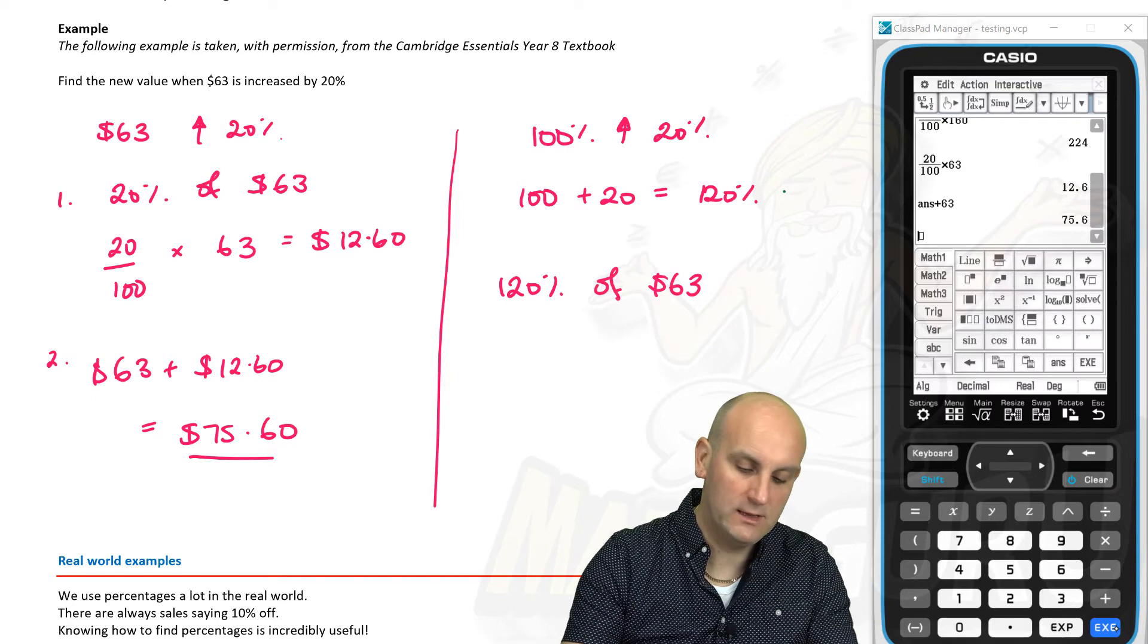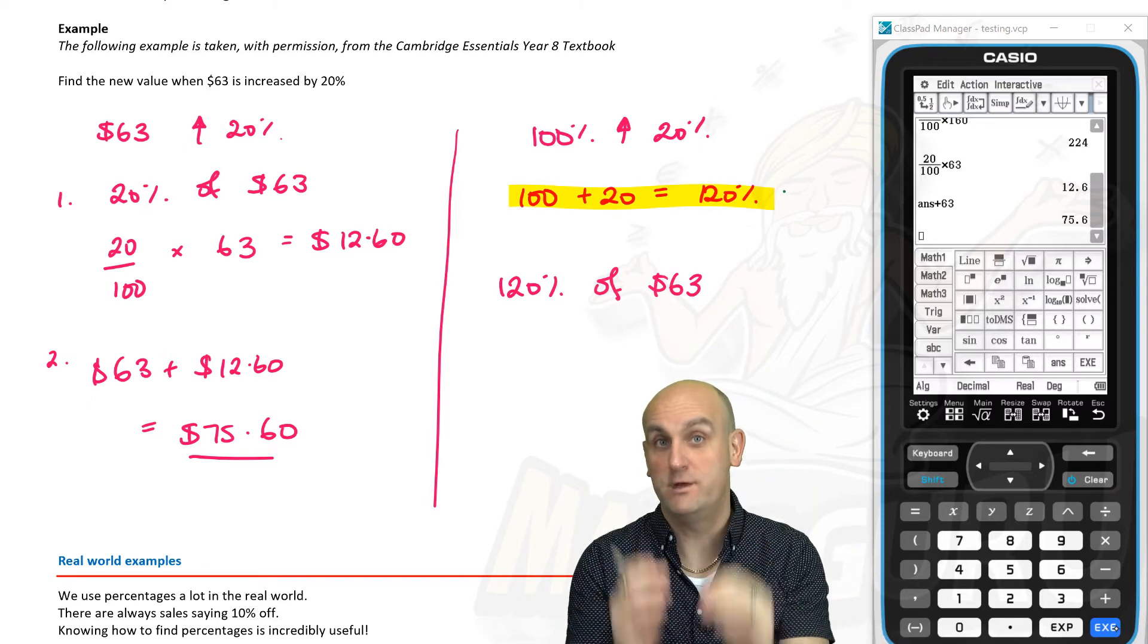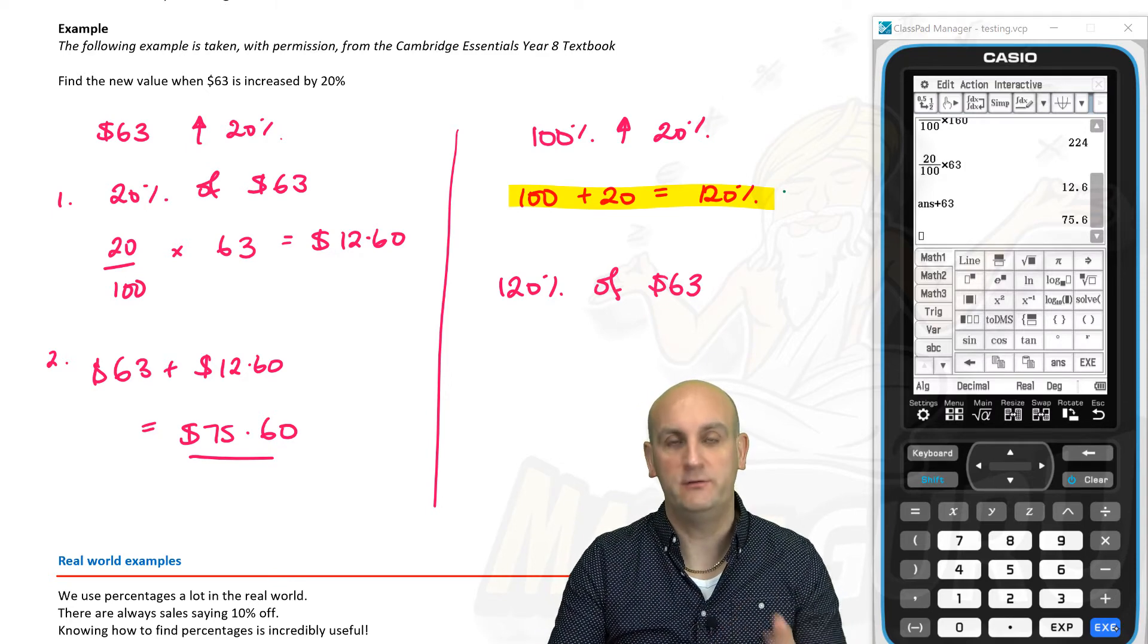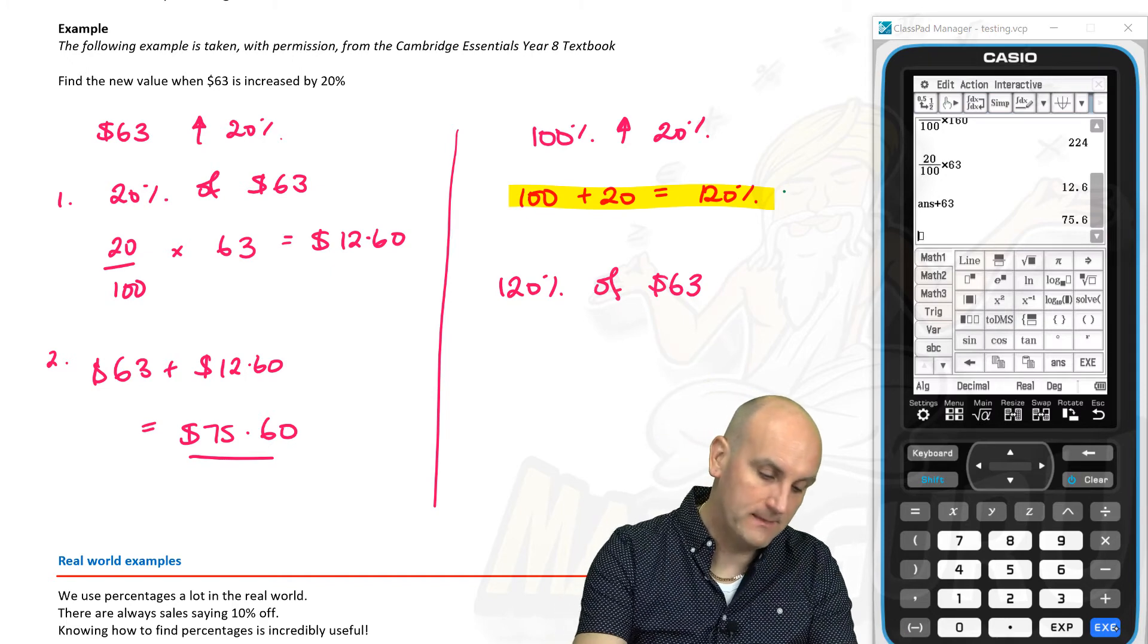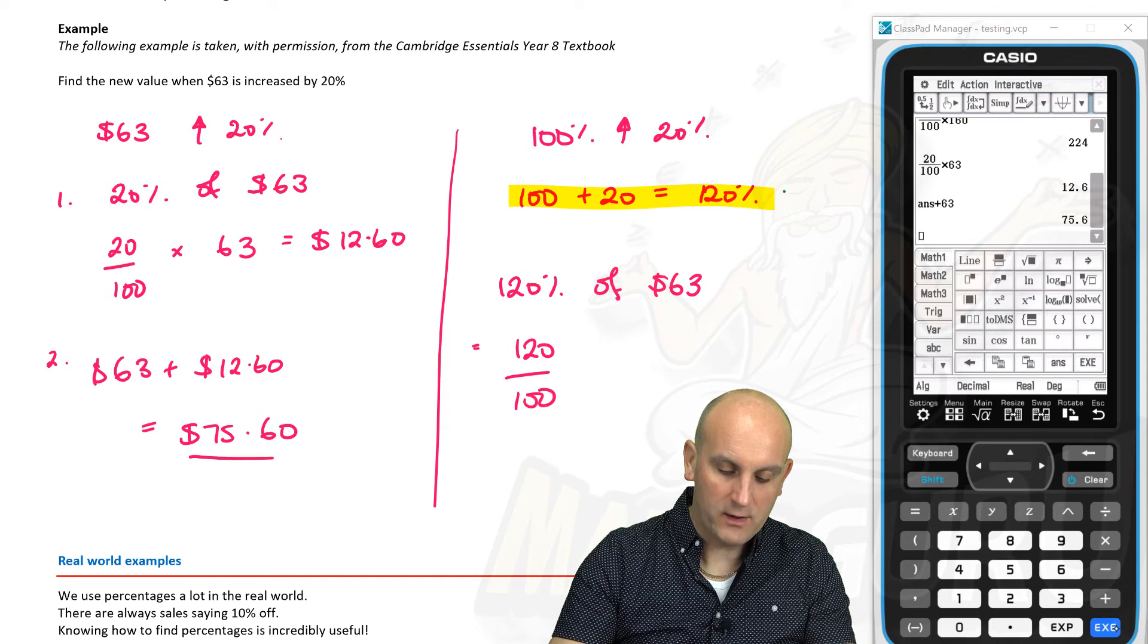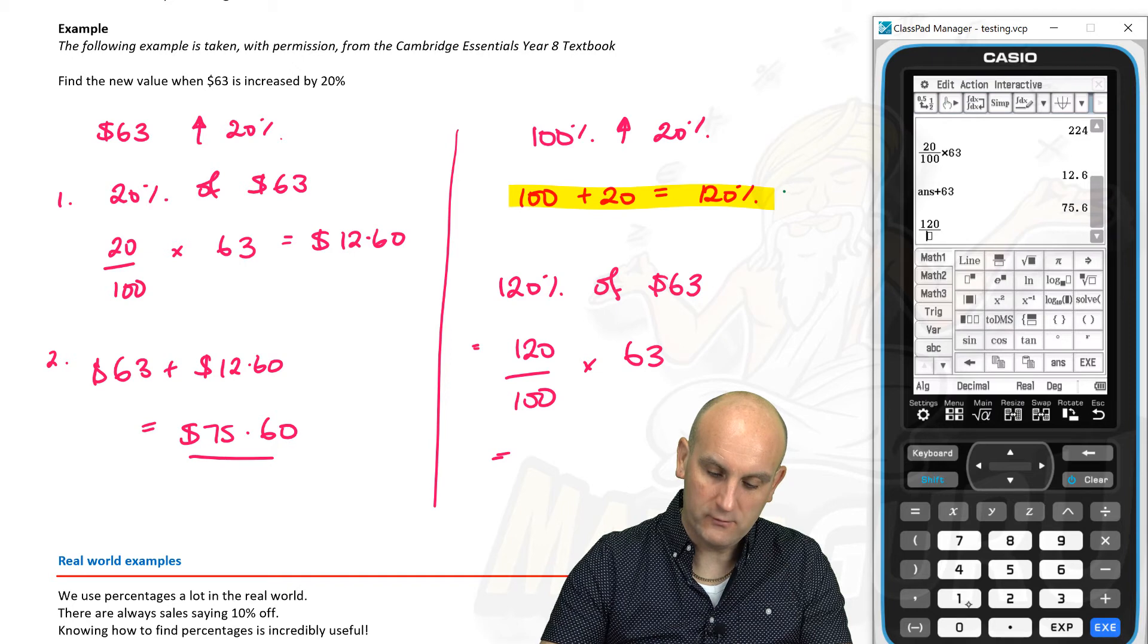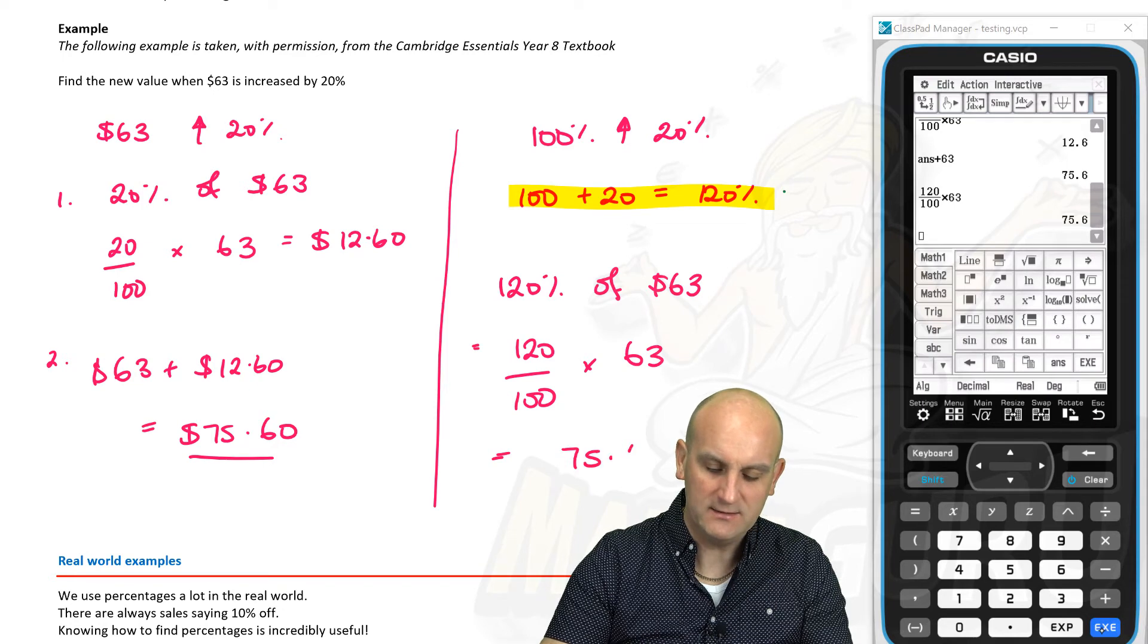$63. Now, some people undoubtedly will email me or message me and go, yeah, but you've done two calculations there. Yes, I have for you guys on here to sort of illustrate my point. To be honest with you, in my head, I wouldn't be writing this down. I'd work it out. 120%. I can do that. That's divided by 100 times 63. Slap this into my calculator. 120 divided by 100 times by 63. Gives me 75.6.